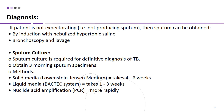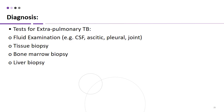Sputum culture is required for definitive diagnosis of TB. Three morning specimens should be collected. Methods include solid media — Lowenstein-Jensen medium, which takes 4–6 weeks — liquid media BACTEC system, taking 1–3 weeks, and nucleic acid amplification by PCR, which is done more rapidly. For diagnosis of extra-pulmonary TB, fluid examination can be performed — for example CSF, ascitic fluid, pleural fluid, or joint space fluid — and tissue biopsy from lymph node, bone marrow, or liver biopsy.